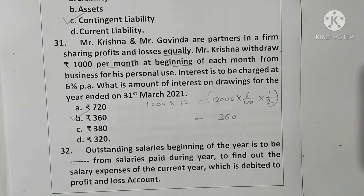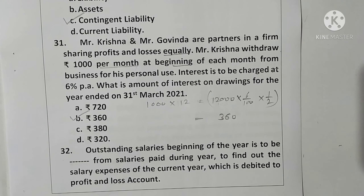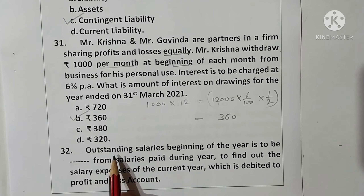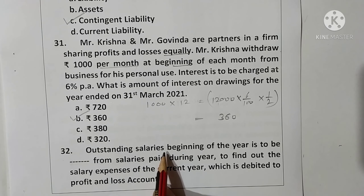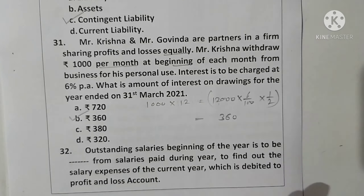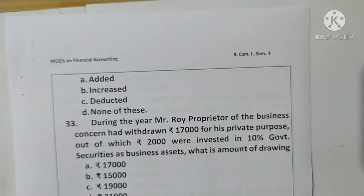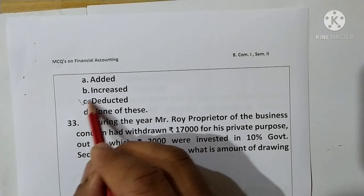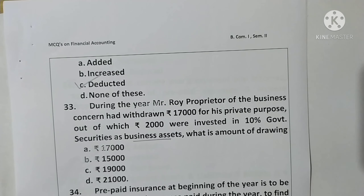Question 32: Outstanding salaries at the beginning of the year are to be deducted from salaries paid during the year to find out the salary expenses of the current year, which are debited to the profit and loss account. Opening outstanding salary is deducted from salary paid. Option C is correct.